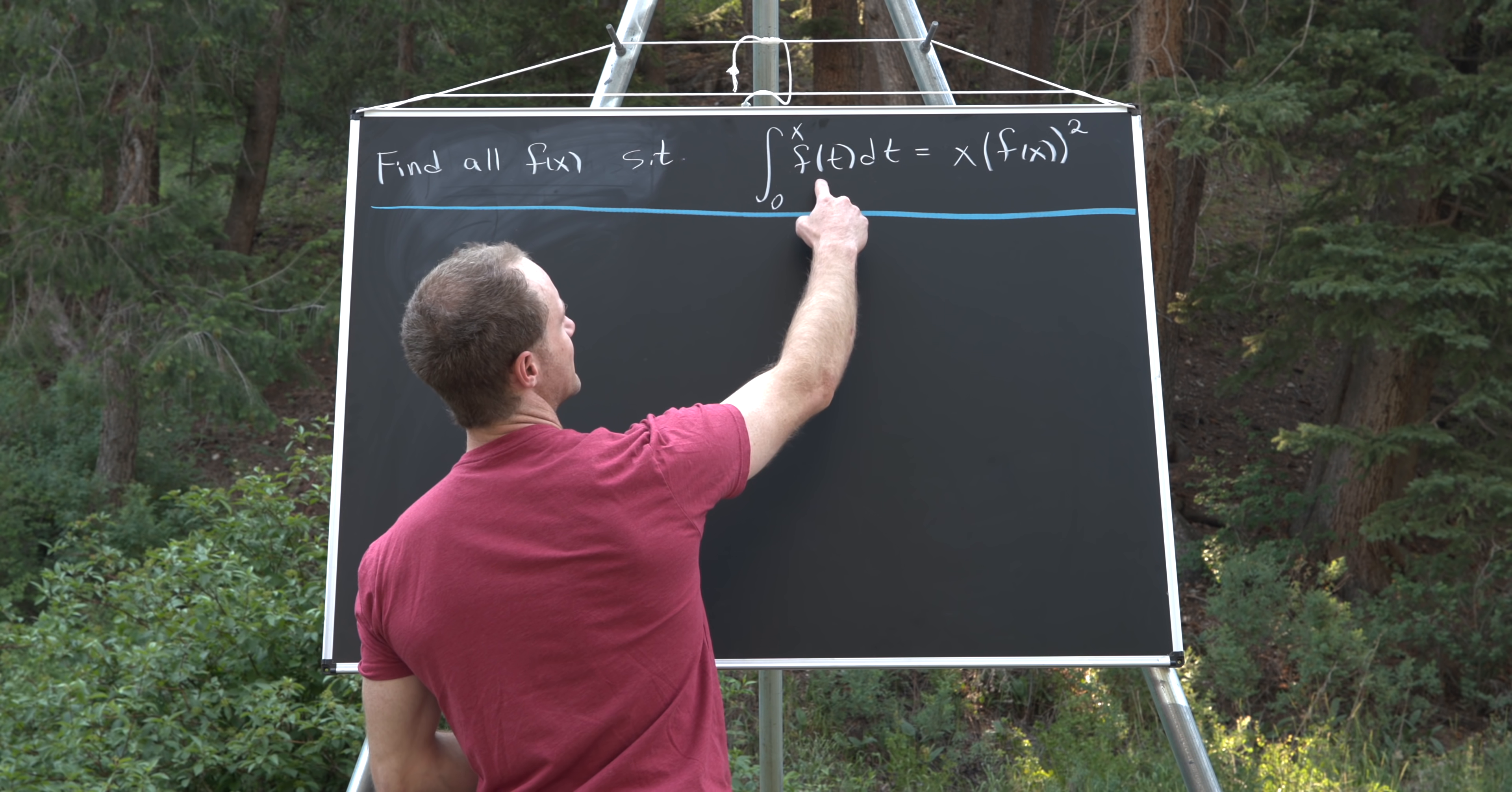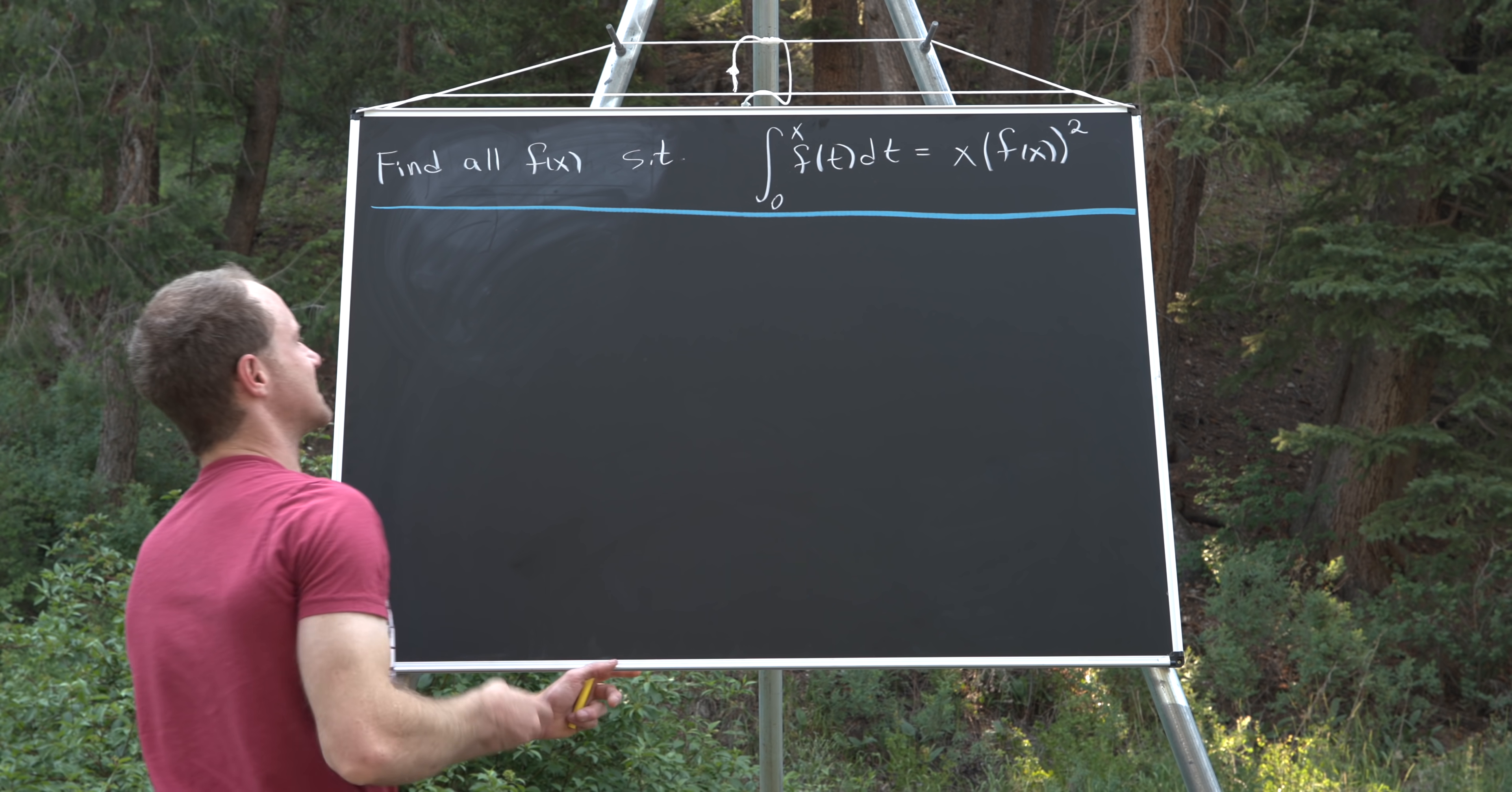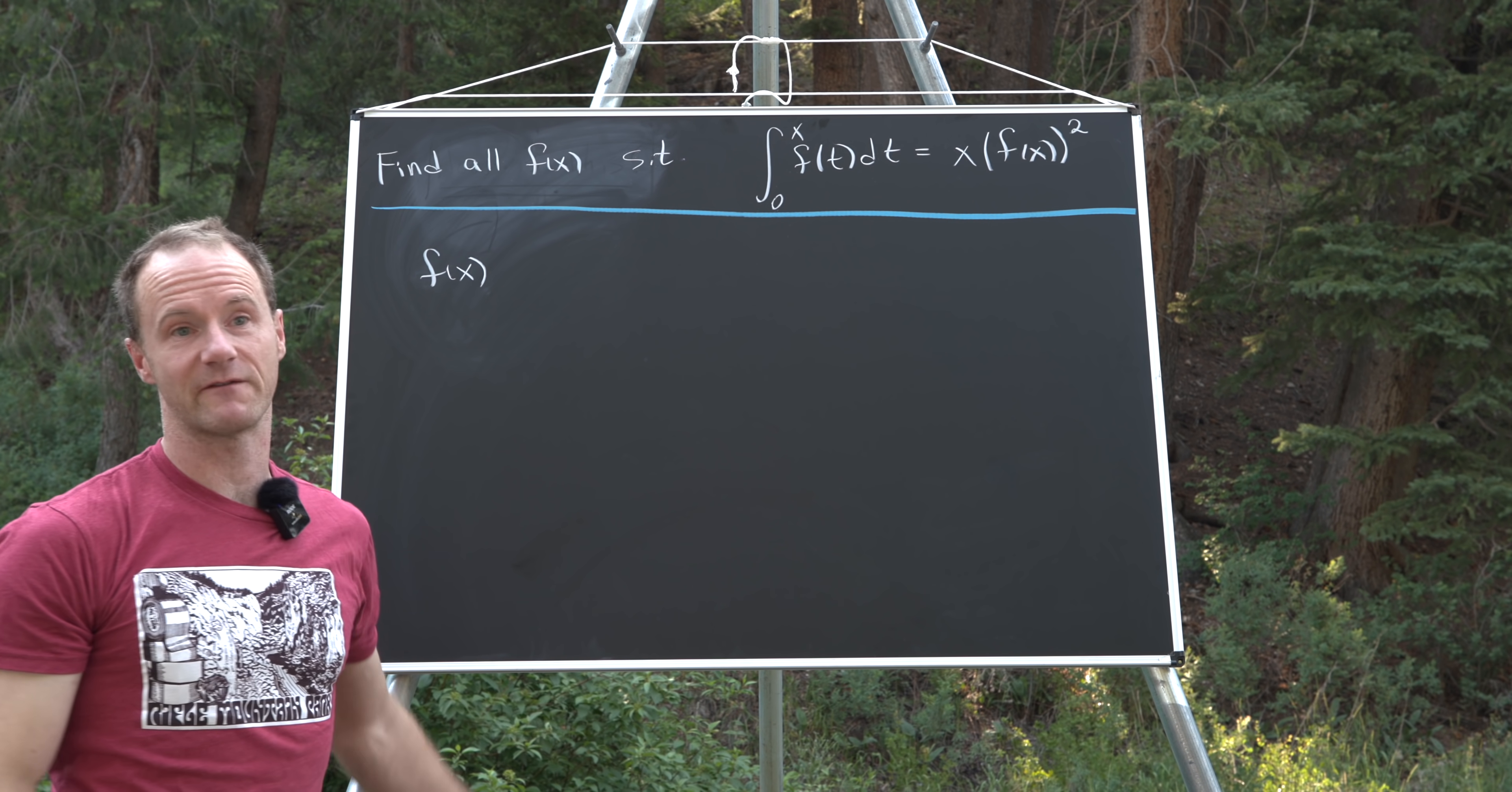That means we want to take the derivative of this left-hand side and the right-hand side. The derivative of the left-hand side will just give us f of x, just again by that fundamental theorem of calculus.